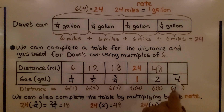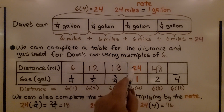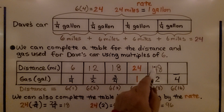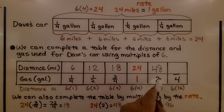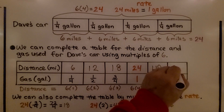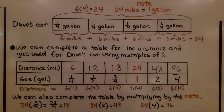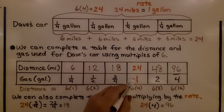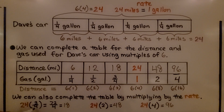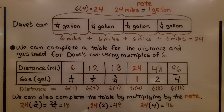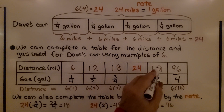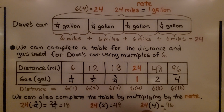For the empty space at four gallons, we could do 24 times four, or 48 times two — since four is double two — which gives 96 miles with four gallons. We can also complete the table by multiplying by the rate. Since we know 24 miles is one gallon, we find three-fourths by doing 24 times three-fourths, which gives 72-fourths, simplifying to 18. Then 24 times two equals 48, and 24 times four equals 96.